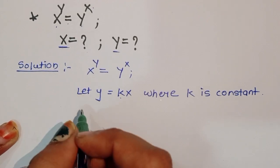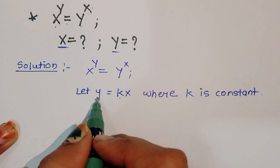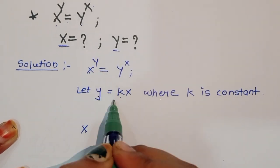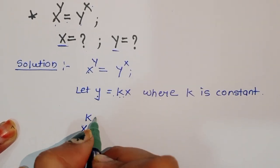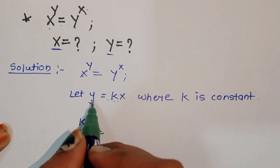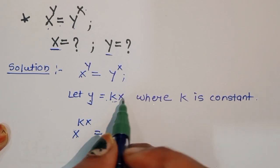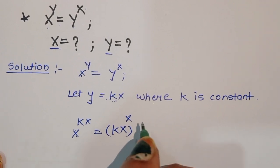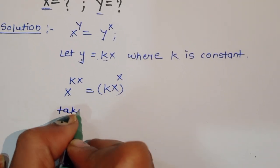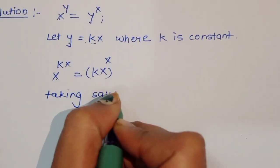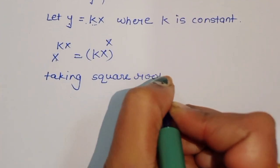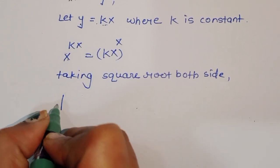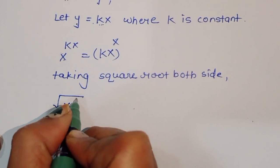Now, substituting y = kx into x^y = y^x, we get x^(kx) = (kx)^x. Taking the square root of both sides gives us the square root of x^(kx) equals the square root of (kx)^x.